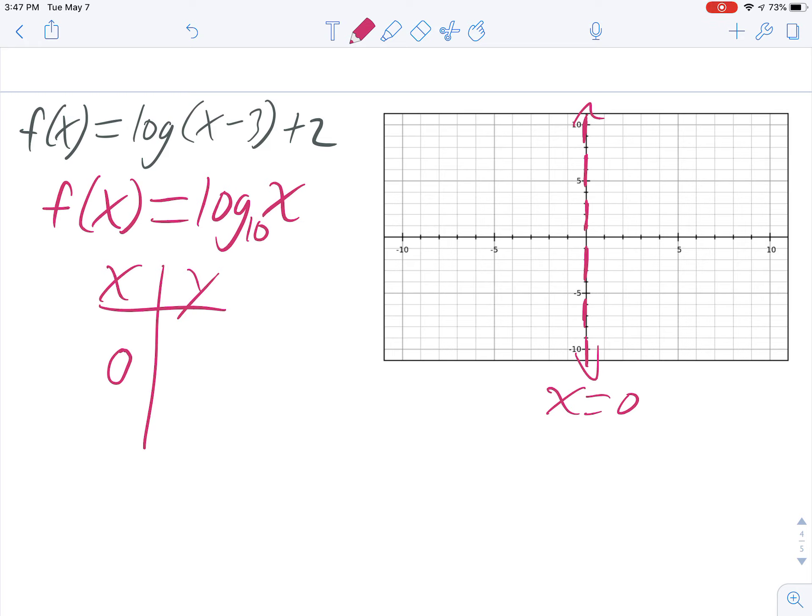Remember this log is an inverse of an exponential. Exponentials had a horizontal asymptote at the x-axis. Logs have a vertical asymptote at the y-axis. So x equals 0 isn't going to work. x equals 1 is going to work.